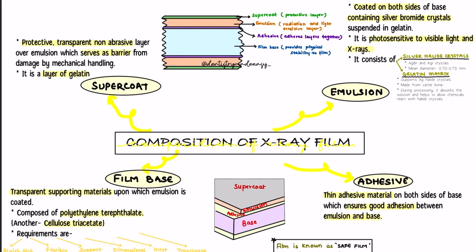Welcome back to Dentistry Made Easy. The topic we are going to discuss today is the composition of x-ray film. This is a very short but important topic. Film is basically where the image is formed — when you expose the patient to radiation, the image is formed on the x-ray film. There is something in this x-ray film that helps in image formation, and we are going to see about that. The components of x-ray films are four.